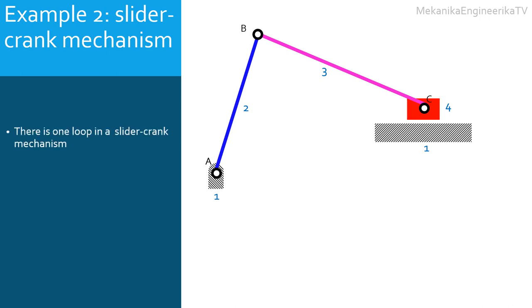In this slider-crank mechanism there is one loop — the whole mechanism draws one loop. Link 1 (the ground) is connected to link 2 (bar AB); link 2 is connected to link 3 (bar BC); link 3 is connected to link 4 (the slider); the slider is connected to the ground, closing the loop. As there is one loop, it is possible to write only one independent loop closure equation, though it can be written in different equivalent ways.